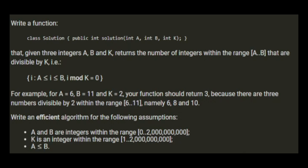For example, for a equals 6, b equals 11, and k equals 2, your function should return 3, because there are three numbers divisible by 2 within the range 6 to 11 — those numbers are 6, 8, and 10. The constraints are: a and b are integers within the range of 0 and 2 billion; k is an integer within the range of 1 and 2 billion; and a is less than or equal to b.